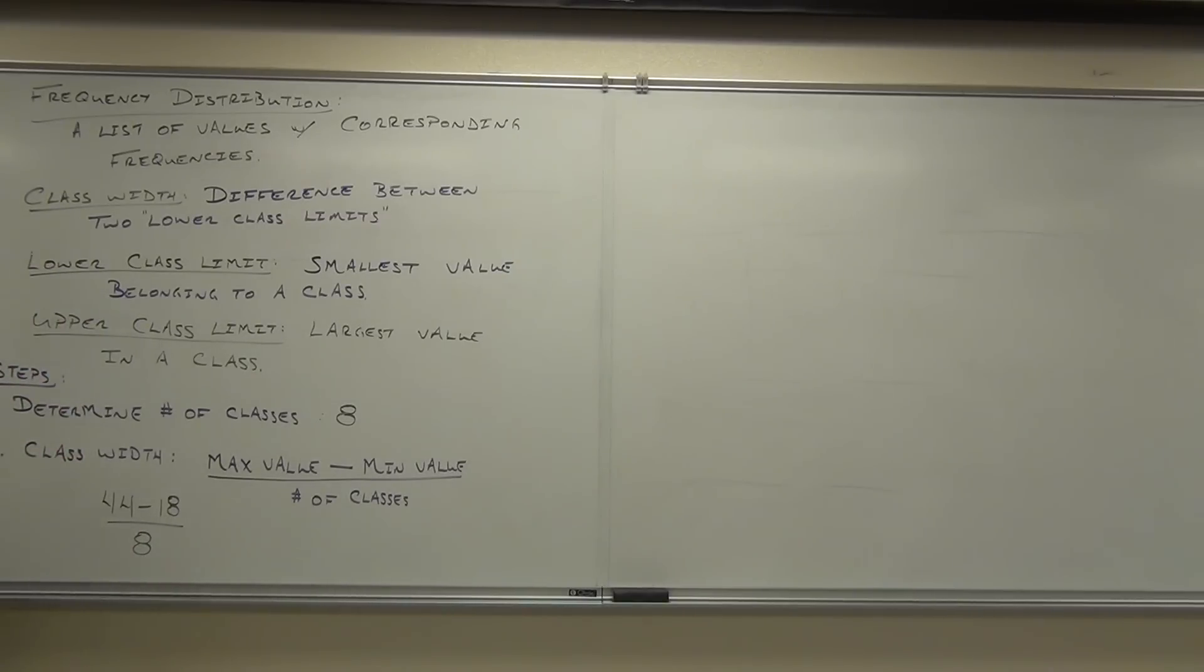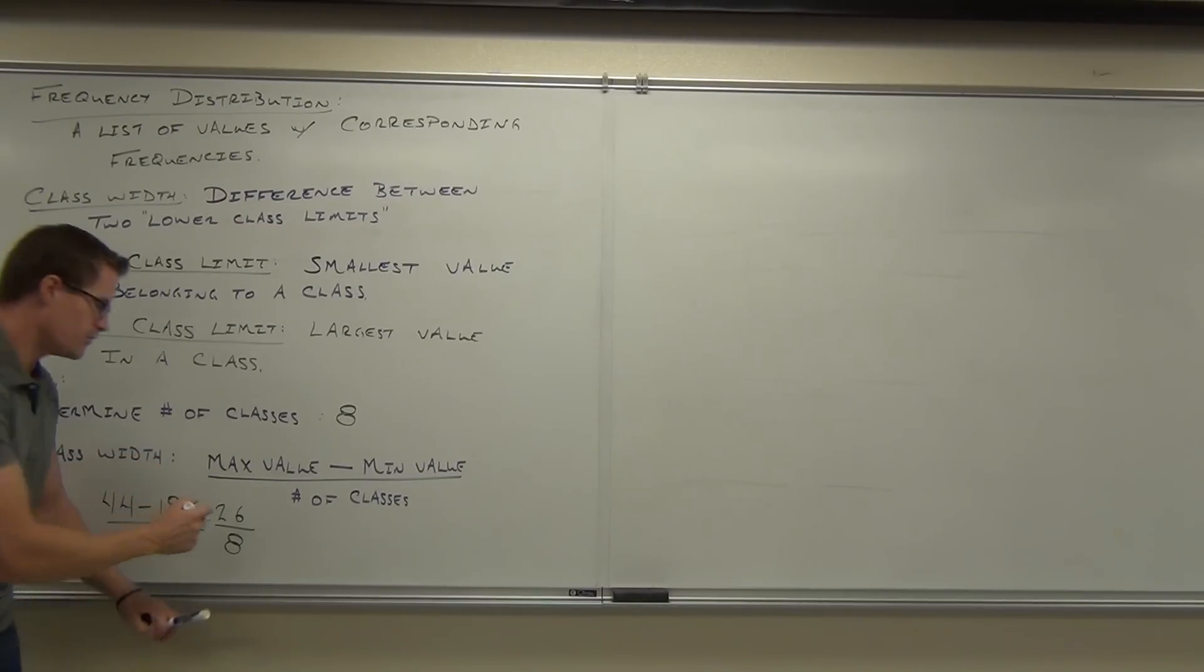So we do that. Someone with a calculator out there, what is 44 minus 18? How much do we get? Don't everyone talk at once. Let's go here, people. How much? 26, you said? I believe you. Divide by 8. Wait a second, Mr. Leonard. 8 doesn't go into 26 evenly. No, chances are this is probably not going to be even. In fact, we get 3.25.